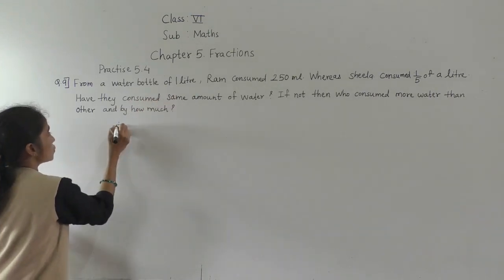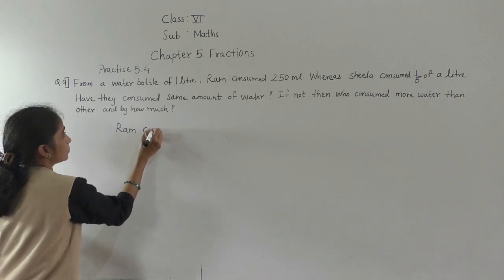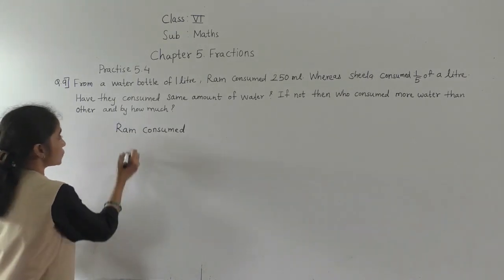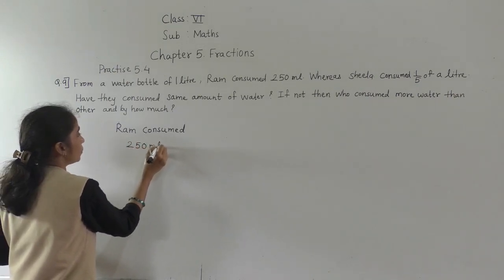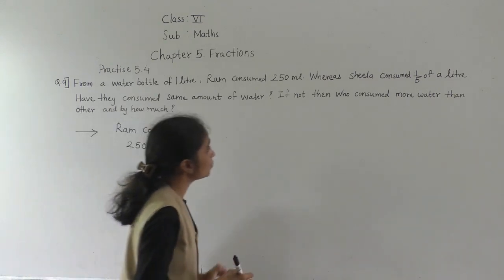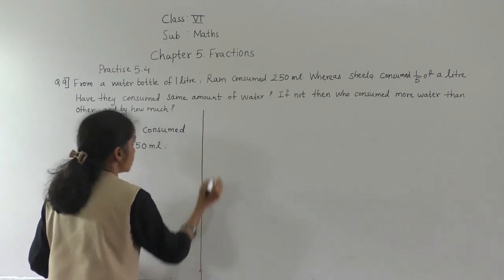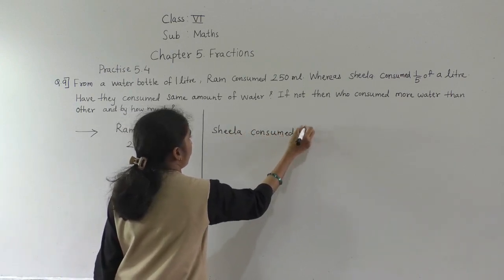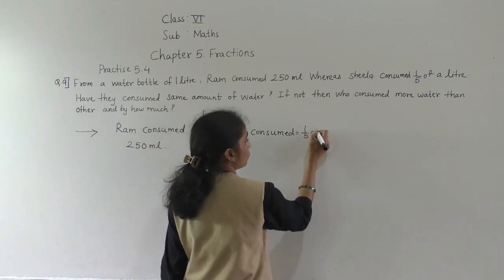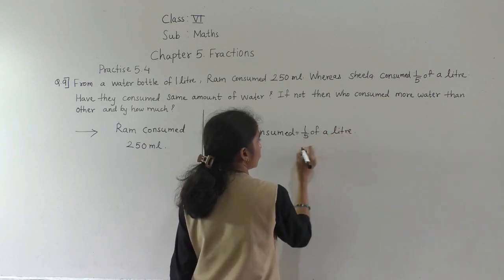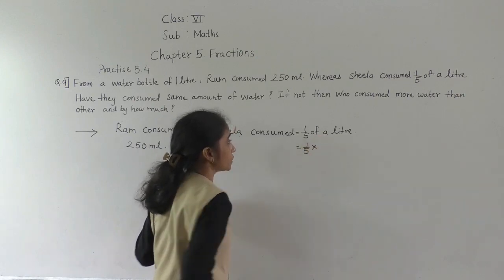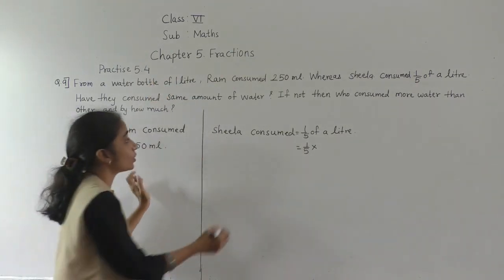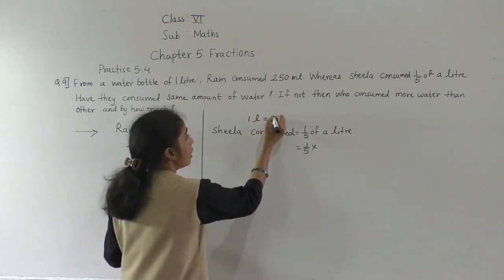From a water bottle of 1 liter, Ram consumed 250 milliliter. This is given in liter and this in milliliter, so we will convert the liter to milliliter. 1 liter means 1000 milliliter. You have learned this — you can use the triangle also.